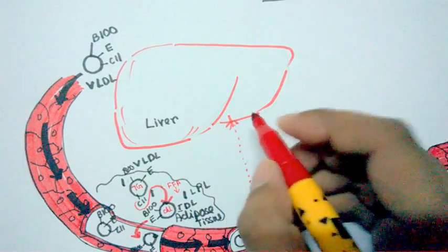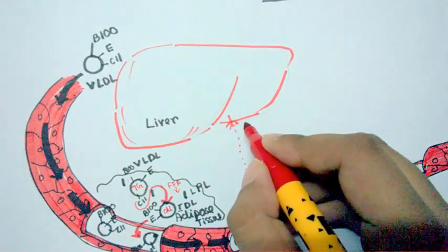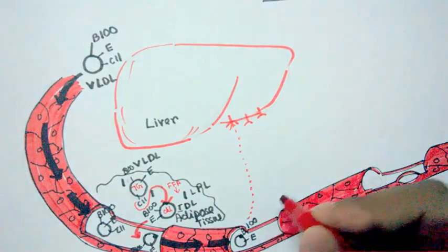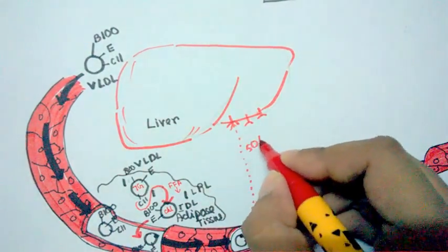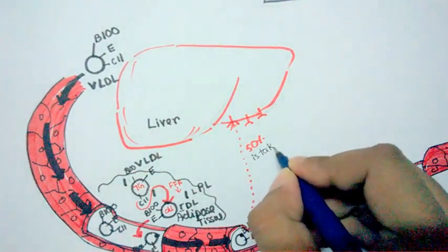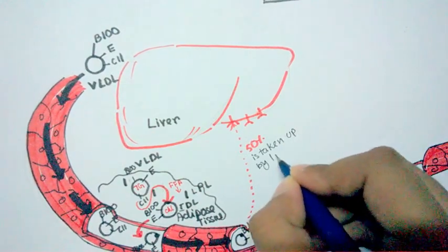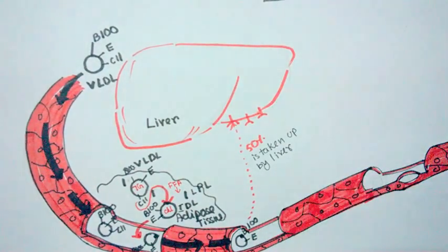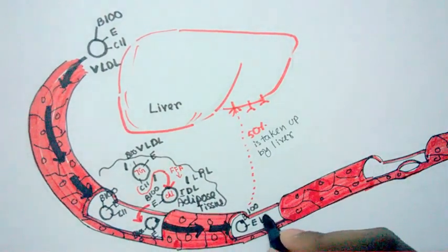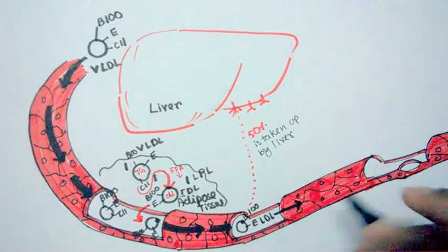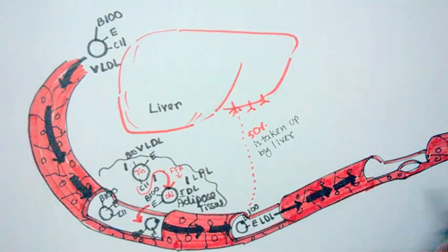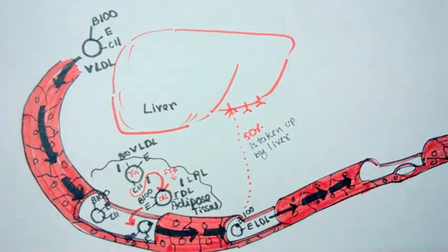What happens to this LDL is that 50% of it is taken up by the liver, because the liver has particular ApoE receptors for these LDL particles. The remaining 50% circulates around the body and supplies cholesterol to the tissues that need it.